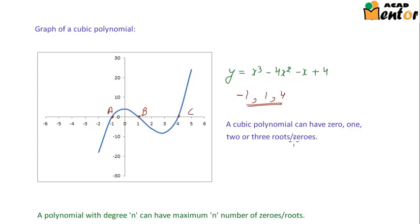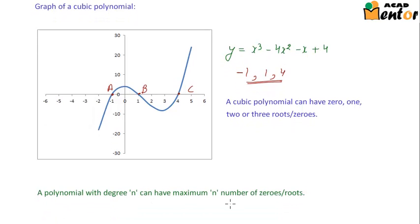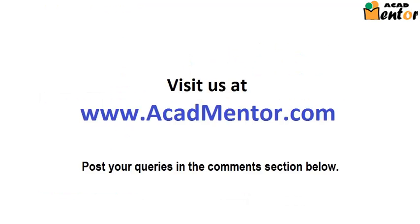We can also generalize that a polynomial with degree n can have a maximum of n zeros or roots.